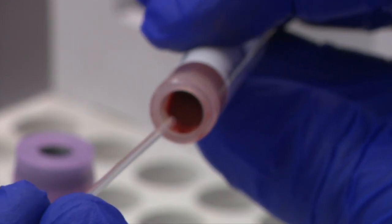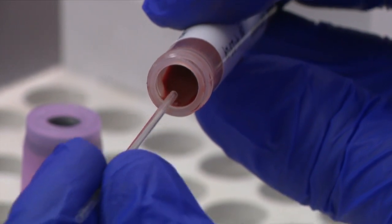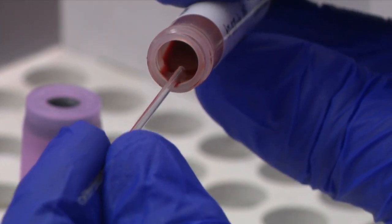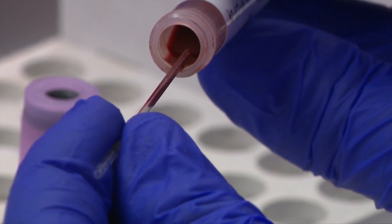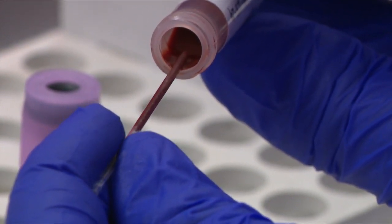Carefully tilt the vial so the sample flows to the open end of the tube. Place one end of the micro hematocrit tube in the blood and then gradually tilt the micro hematocrit tube downward until the tube is two-thirds full of blood.